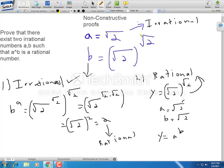The reason this is a non-constructive proof is because we don't know if root 2 raised to root 2 is irrational or rational. That was the video, and I hope you learned something new today. Have a nice day.